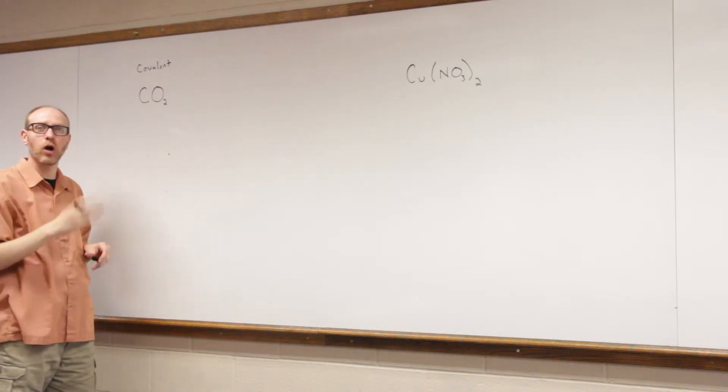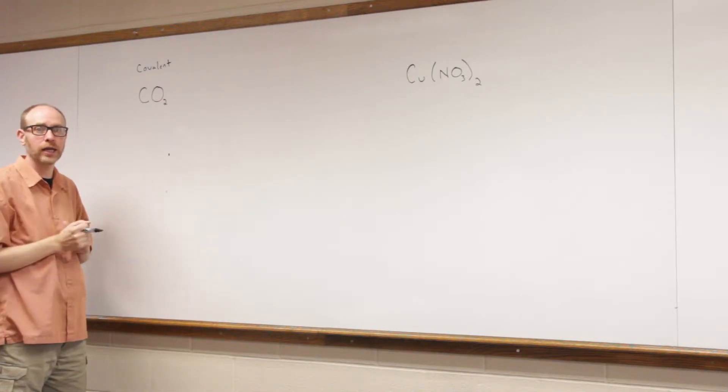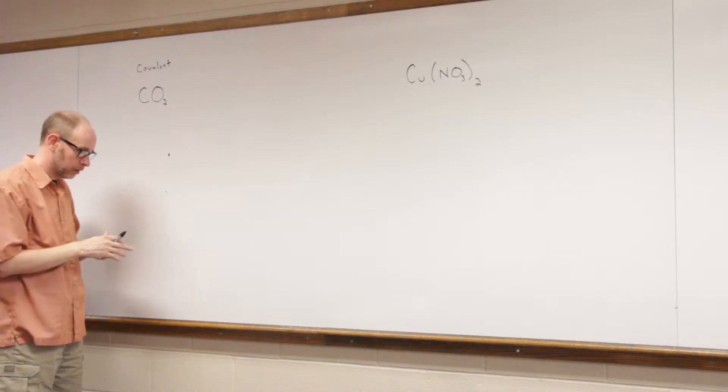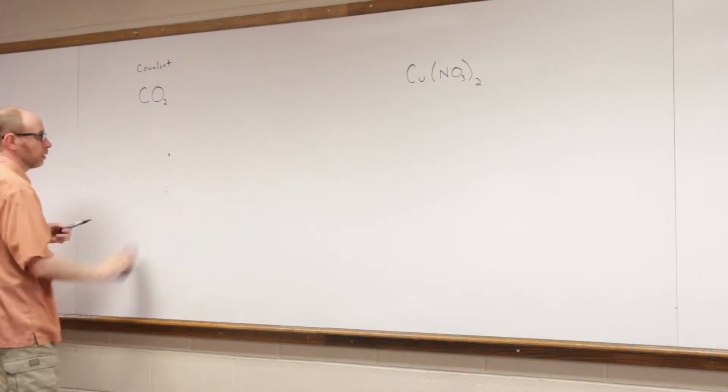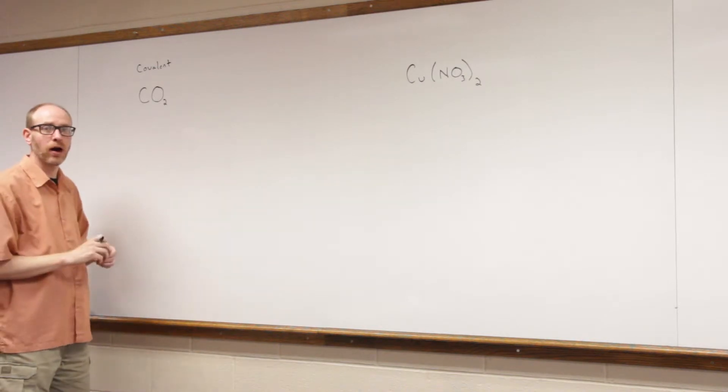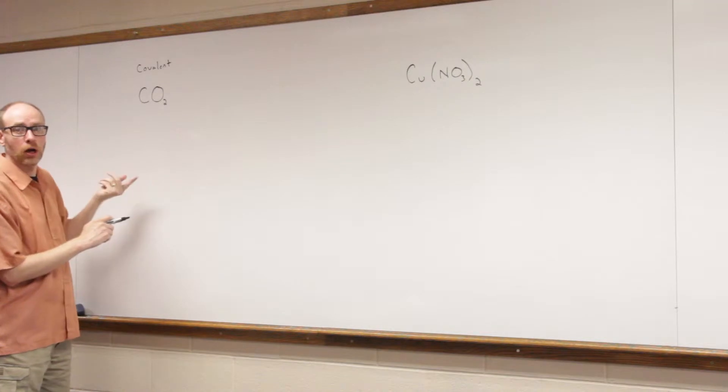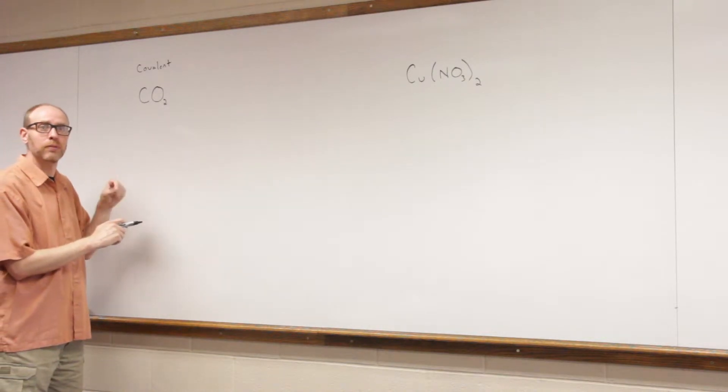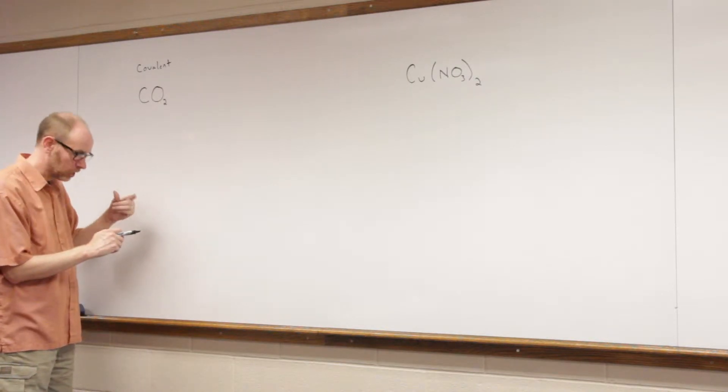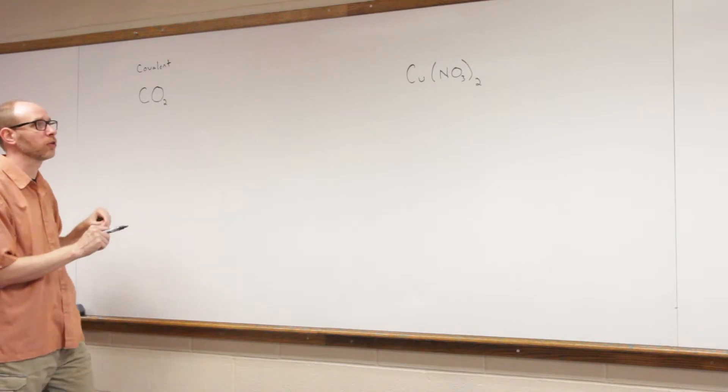And in that case, the atoms do not have a charge. They are neutral atoms, they are held together by these shared pairs of electrons, these covalent bonds. However, we can keep track of the electrons using oxidation numbers. So even though the atoms don't have a charge, the oxidation number will allow us to keep track of where the electrons are at.